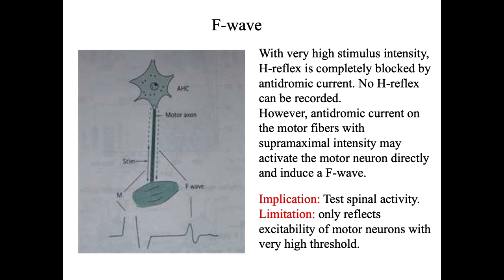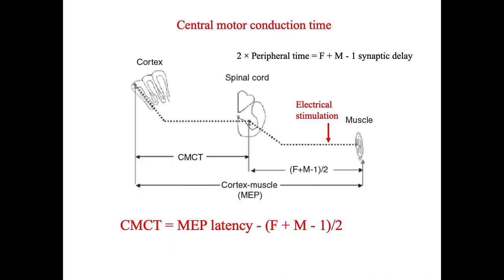We can also use the F-wave to test the spinal cord activity. A clear limitation of the F-wave is that it only reflects the excitability of motor neurons with very high firing threshold. There is an important implication for the F-wave recording: this is named the central motor conduction time, CMCT.